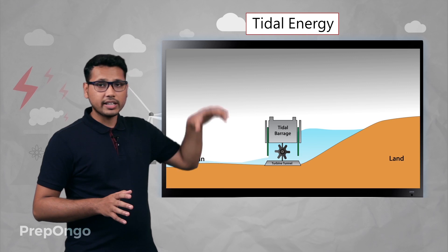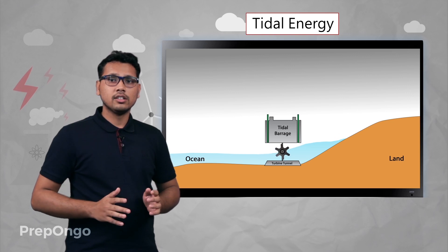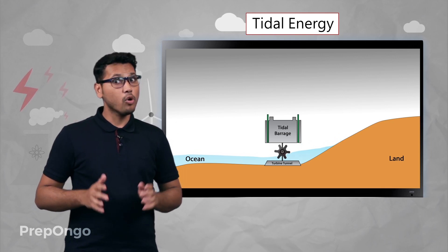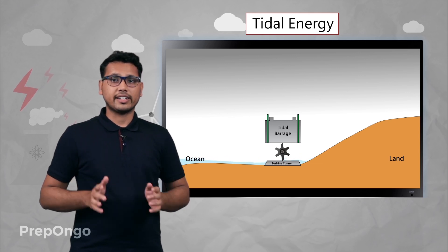Water flows from the reservoir into the sea. So we get one more rotation of the turbine and hence we get electricity again.